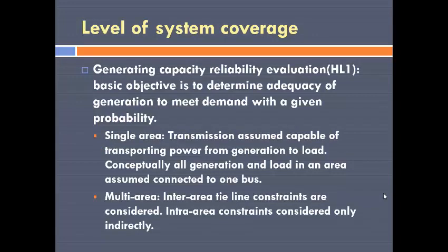In terms of system coverage, there are basically three levels at which most of the work has been done. The first level is sometimes called hierarchical level one, HL1, also called the generating capacity reliability evaluation. The basic objective in generating capacity reliability evaluation is to see how much capacity we should have so that the load or demand can be served with a certain level of probability.